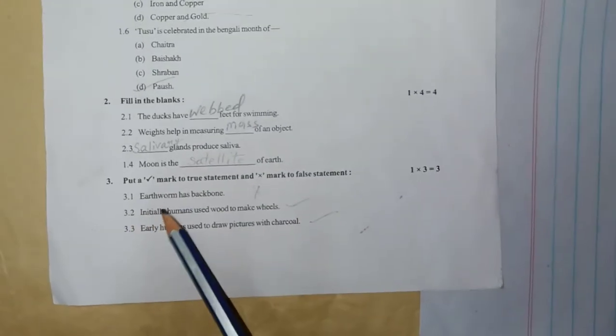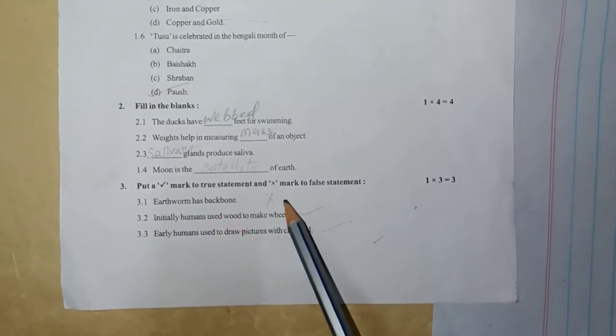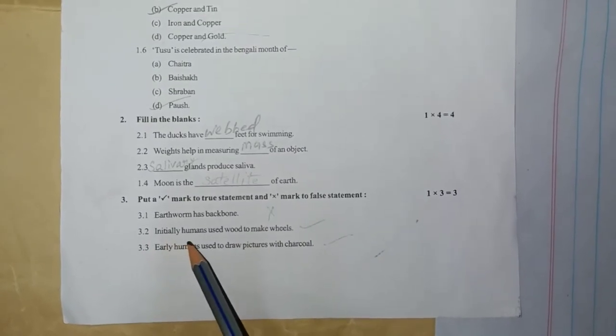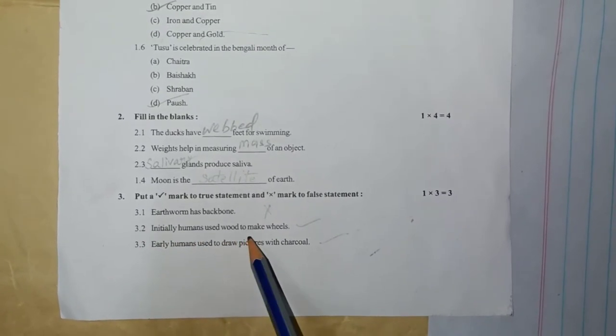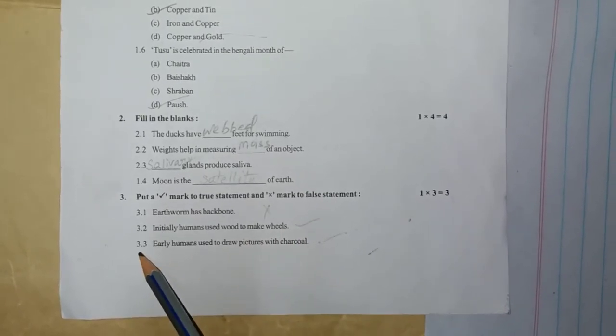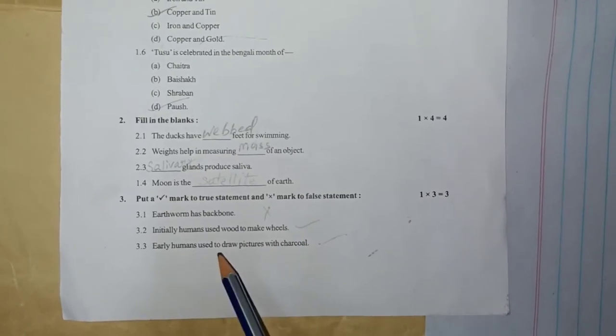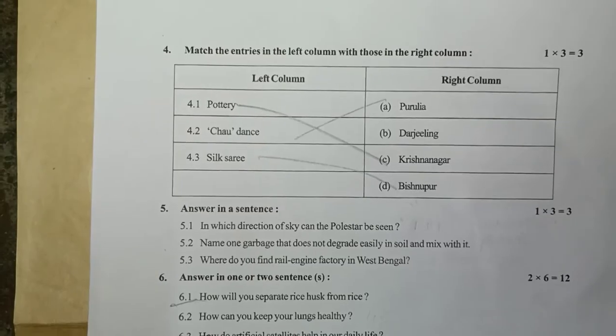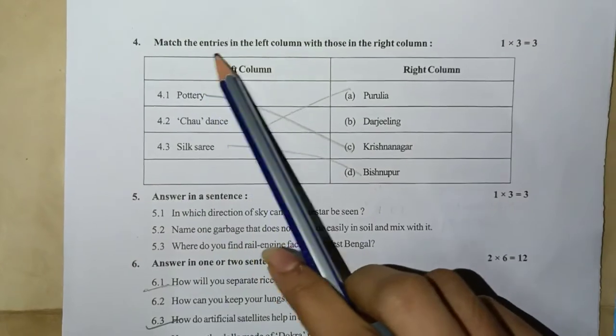3.1: Earthworm has a backbone - wrong. 3.2: Initially humans used wood to make wheels - right. 3.3: Early humans used to draw pictures with charcoal - true, right. Question number 4: Match the entry in the left column with those in the right column.